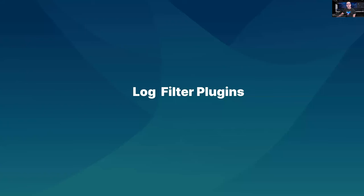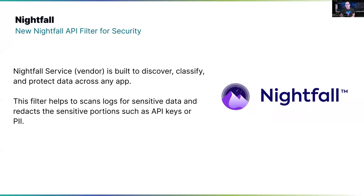Let's jump to filter plugins. One new filter is called Nightfall. Nightfall is a third-party service that ensures if your records contain any sensitive information like API keys or PII, it can perform data redaction to make sure you're not shipping any sensitive data. This is a contribution from Nightfall to FluentBit, so thanks to Nightfall for contributing this. The filter is ready to go — check the documentation and you can start trying it out.